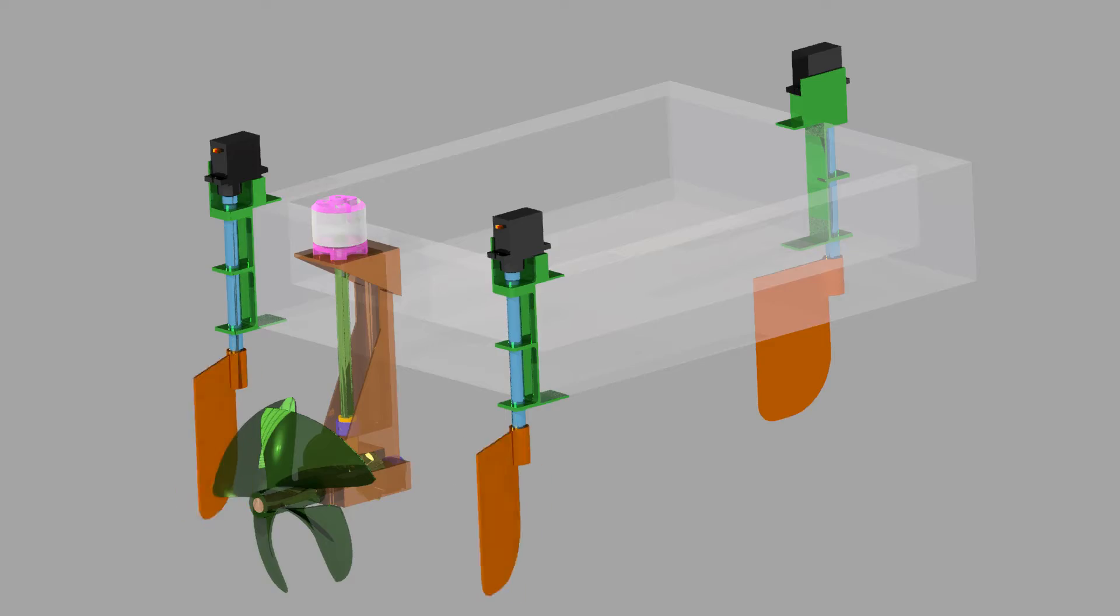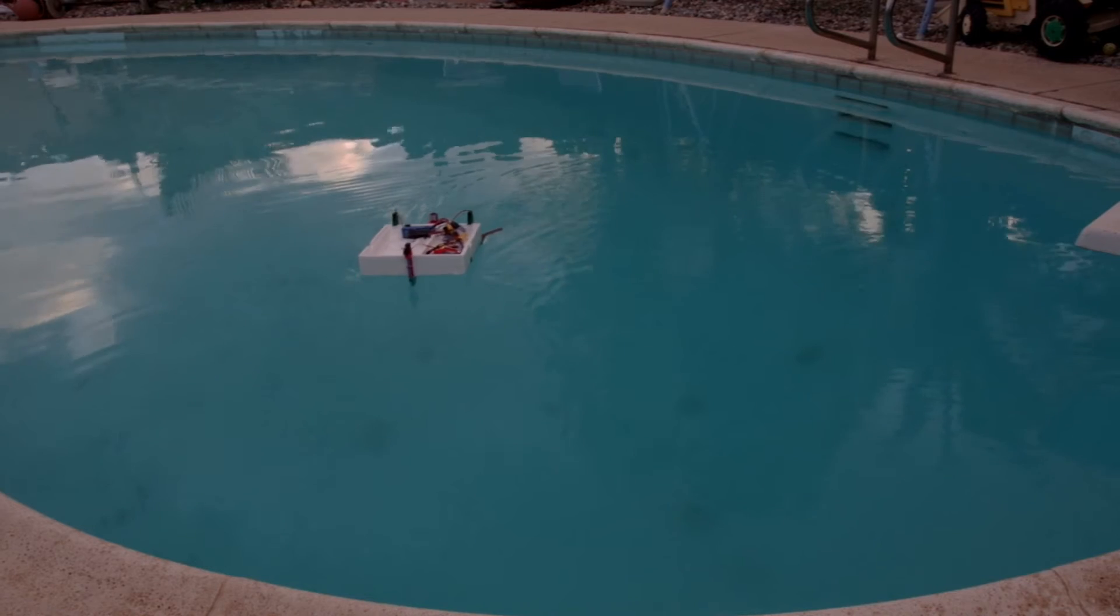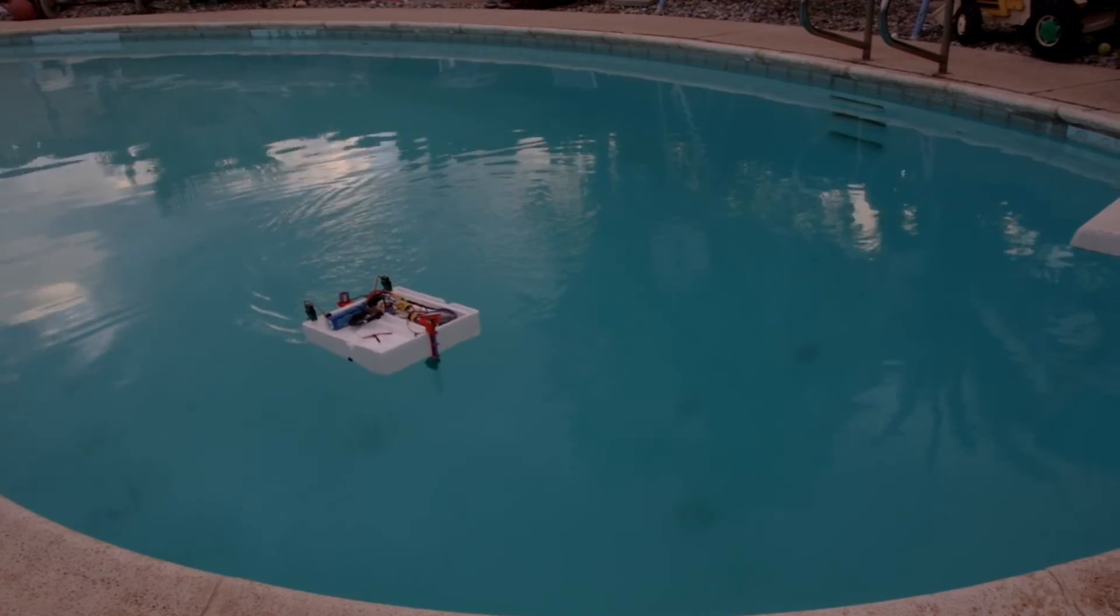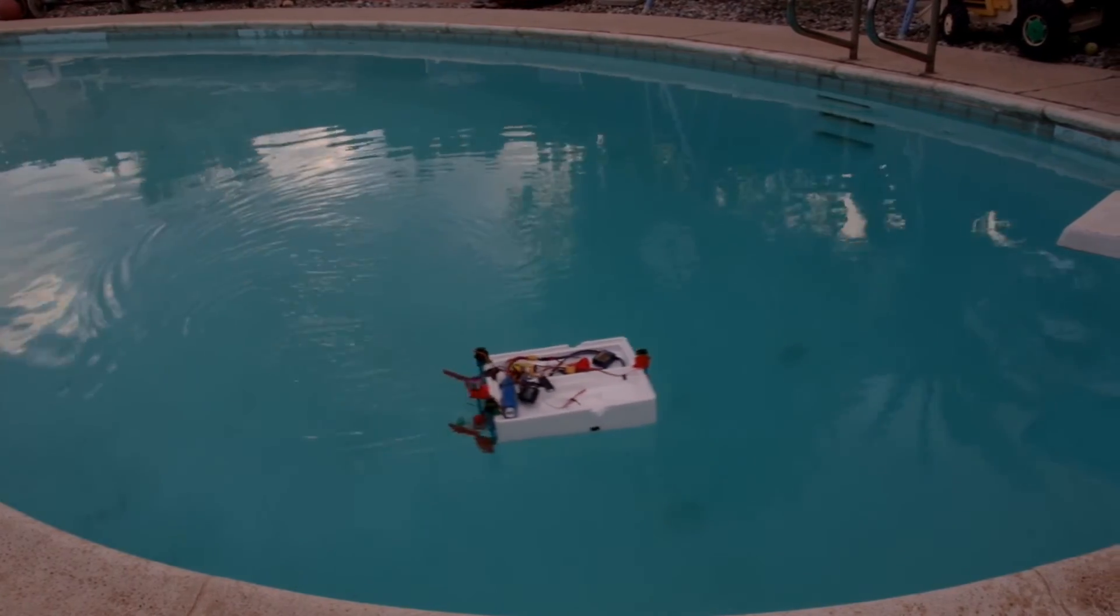The second test disables the front rudder and relies on the two rear rudders to maneuver. The turning radius is substantially larger than the control setting and the maneuvers feel drifty and loose.